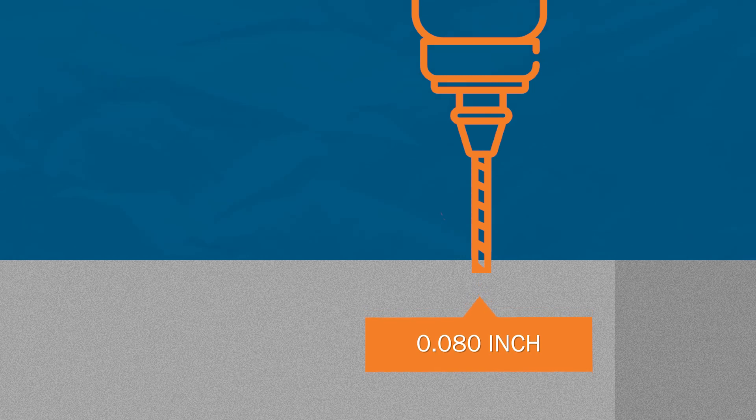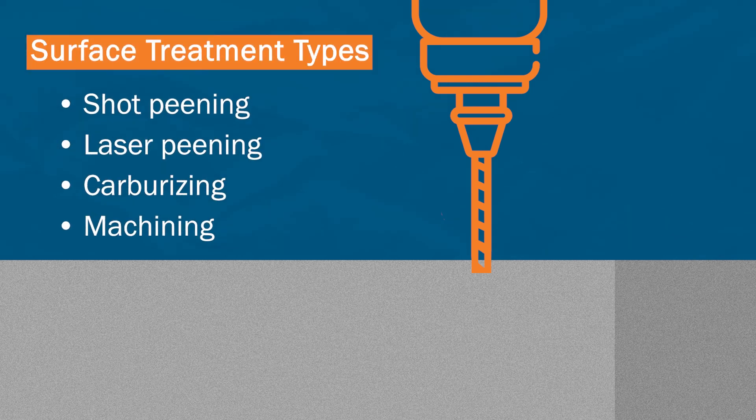Hole drilling works best for measuring residual stress near the surface of a specimen, up to depths of 80 thousandths of an inch. It is a useful technique for understanding the effects of finishing processes like shot peening, laser peening, carburizing, and machining.